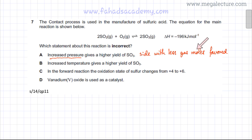So less gas moles side would be favored. If you look at the equation on the left hand side you have three molecules, two of SO₂ and one of O₂. So that's three molecules of reactants and on the other side you have two molecules of SO₃. So if you increase pressure more forward reaction would occur and it is going to give a higher yield. More output of SO₃ would be produced which is correct. So the first statement is correct.